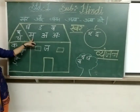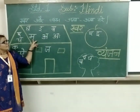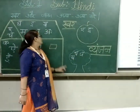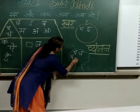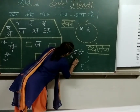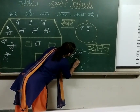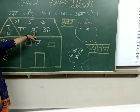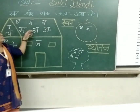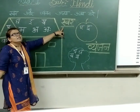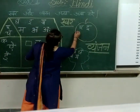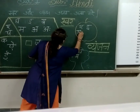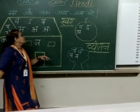म से — म से क्या होता है? Swar or Vyanjan? म से Vyanjan hota hai. So we have to write Vyanjan — kahan likhenge? Vriksh mein. Then अ से अनार — अ से अनार क्या होता है? Swar. To ye Swar ko kahan likhna hai? अ से अनार ko likhenge save ke andar.